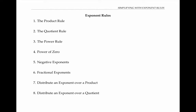The product rule says that when you multiply two expressions with the same base, you add the exponents. The quotient rule says that when you divide two expressions with the same base, you subtract the exponents. The power rule says that when you take a power to a power, you multiply the exponents.